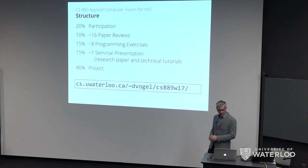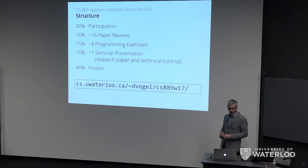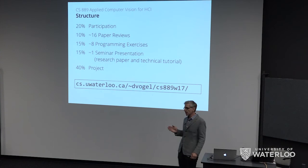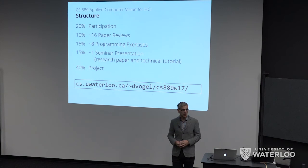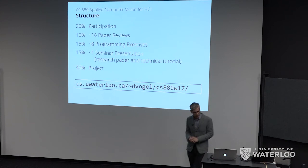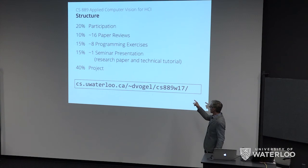Here's the course structure. There's a big chunk for participation — basically show up and talk. We typically have about 16 paper reviews, which is 10% of your mark. The programming exercises are 15% and marked quite liberally. There's a seminar presentation worth 50%, where you not only read and present a research paper but also present the specific computer vision technique used in that paper — so you teach the class, for example, about morphological operations. And then there's a big project at the end. The website for Winter 18 isn't up yet, but you can look at Winter 17 to get a sense — the structure will be very similar.